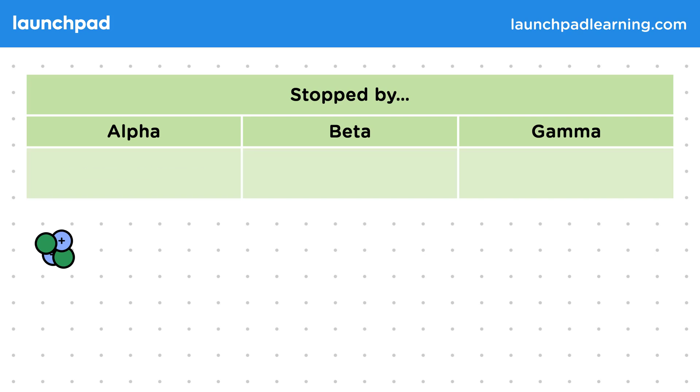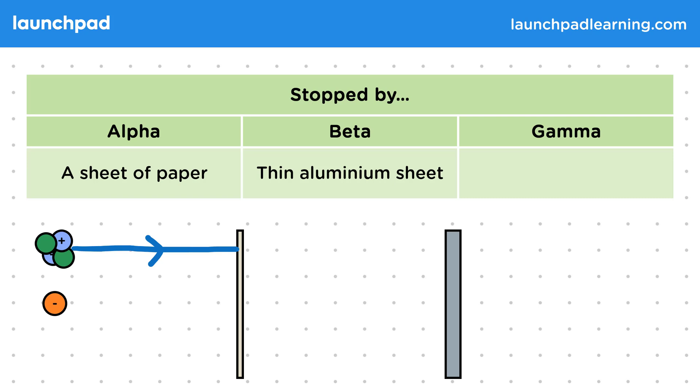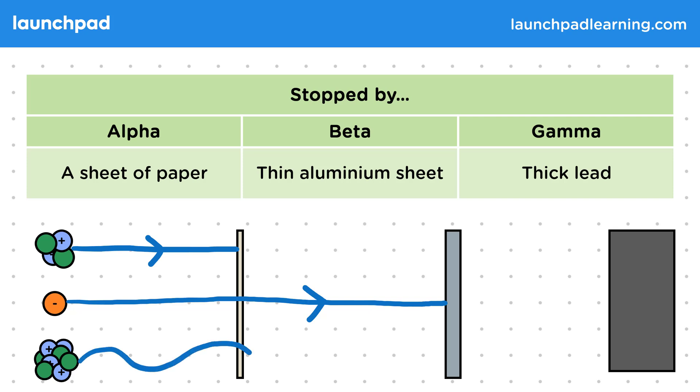Alpha radiation can be stopped by a sheet of paper. Beta particles can be stopped by a thin aluminium sheet. Gamma rays can be stopped by thick lead.